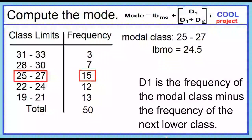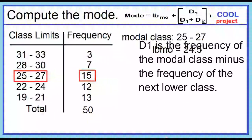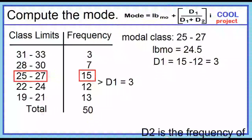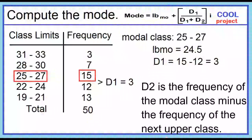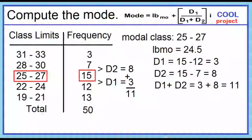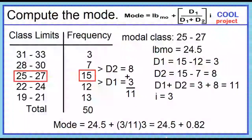D₁ is the frequency of the modal class minus the frequency of the next lower class: 15 minus 12 is 3. D₂ is the frequency of the modal class minus the frequency of the next upper class: 15 minus 7 is 8. D₁ plus D₂ equals 3 plus 8, which is 11. The class width is 3. Substituting: the mode equals 24.5 plus (3 over 11) times 3, equals 24.5 plus 0.82, which equals 25.32.